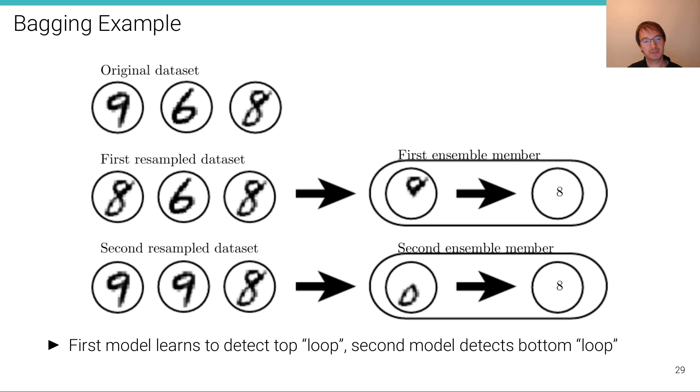So here's an example or an intuition behind bagging. So we have an MNIST classification problem here where we want to classify the number 8. And we have this data set here on the top with 9, 6, and 8. And assume that during bagging the first data set to draw is this data set. We have drawn an 8, a 6, and an 8. And the second data set is this one here where we've drawn a 9, a 9, and an 8. You can already see some of the elements are duplicates of the original data set. Some elements of the original data set are not present in the resample data set.